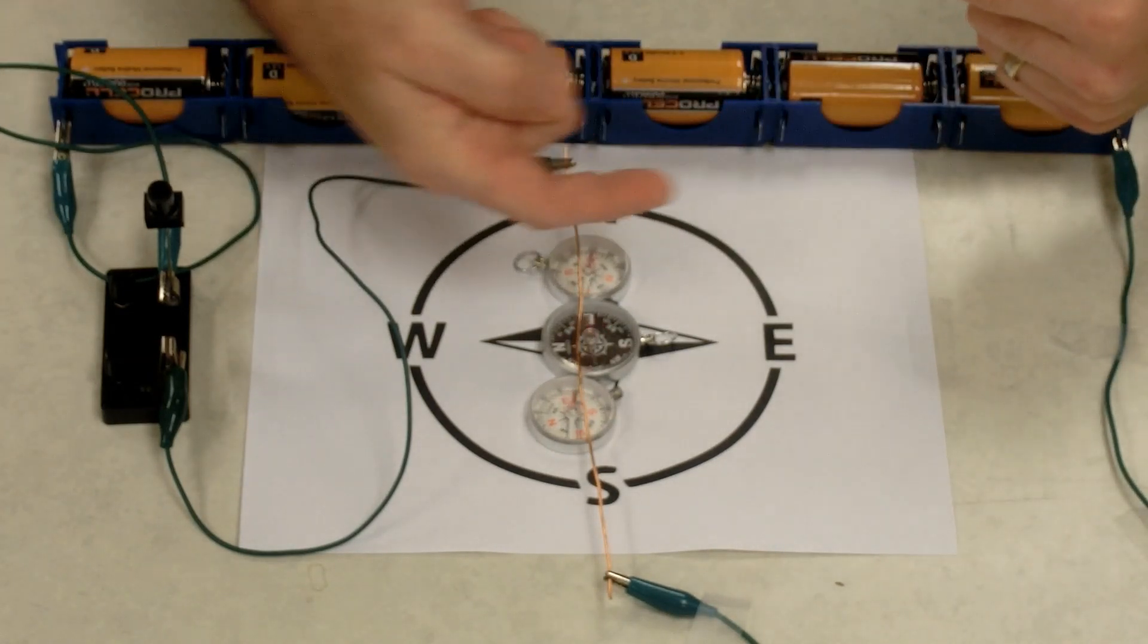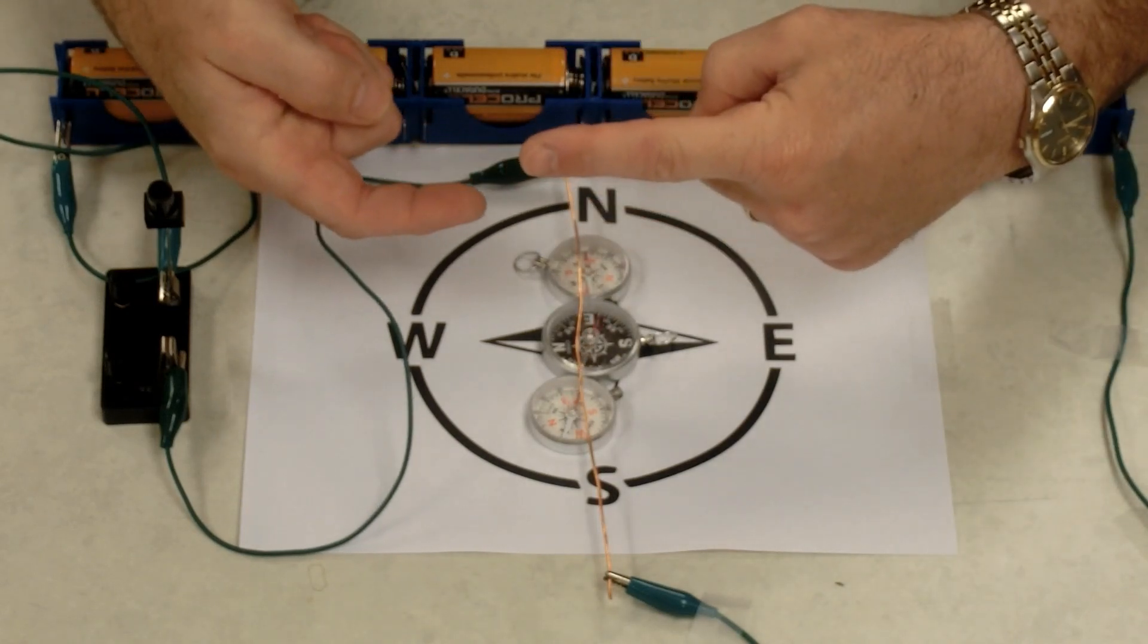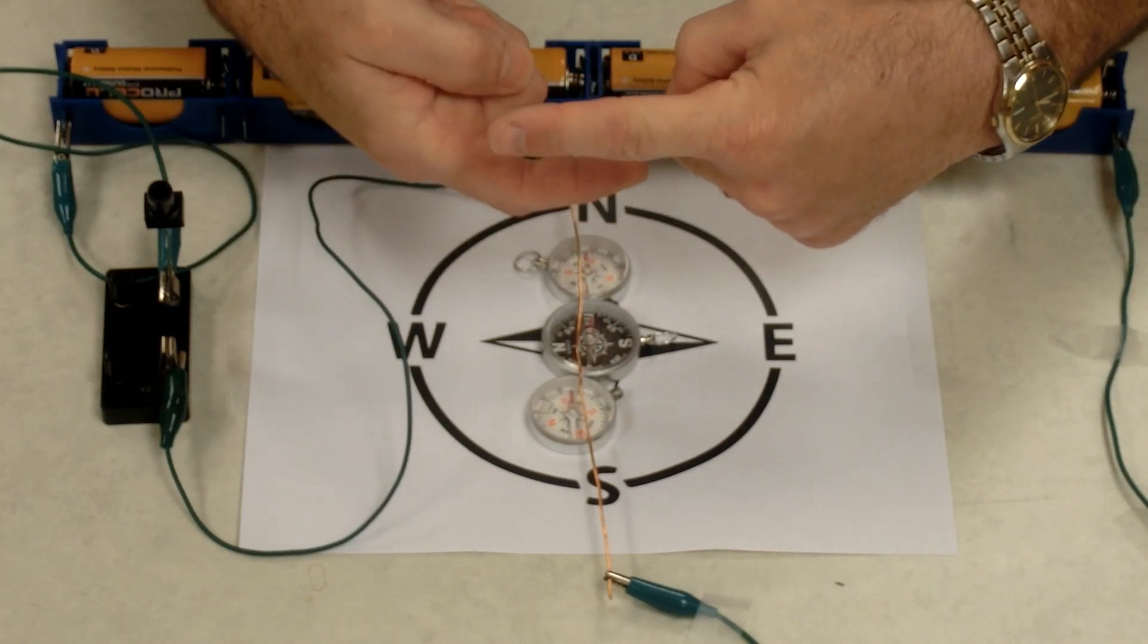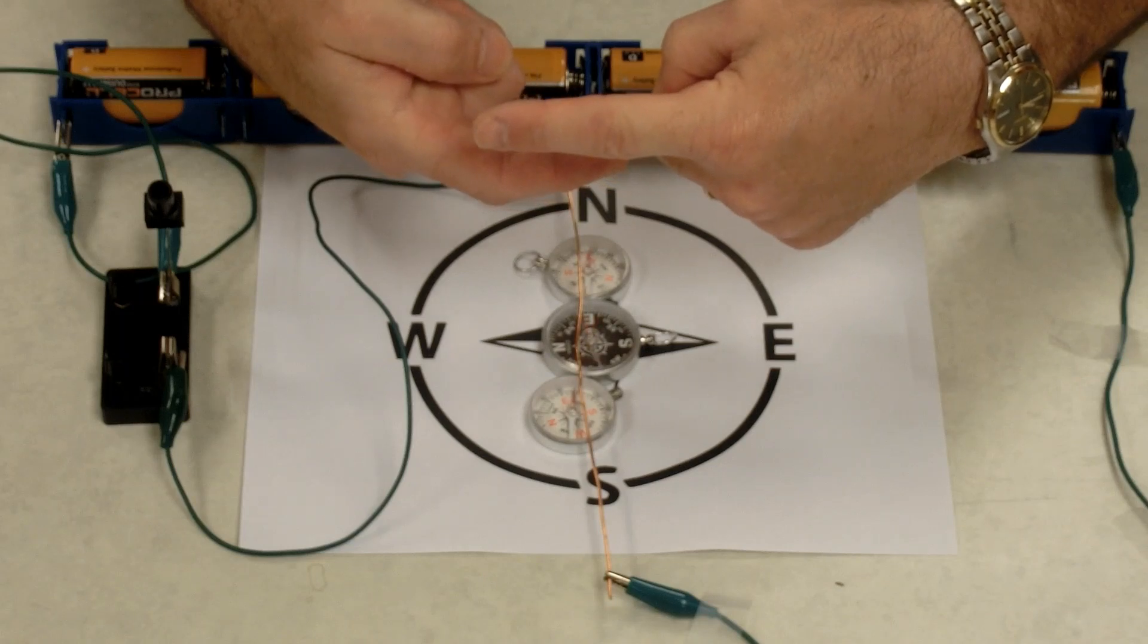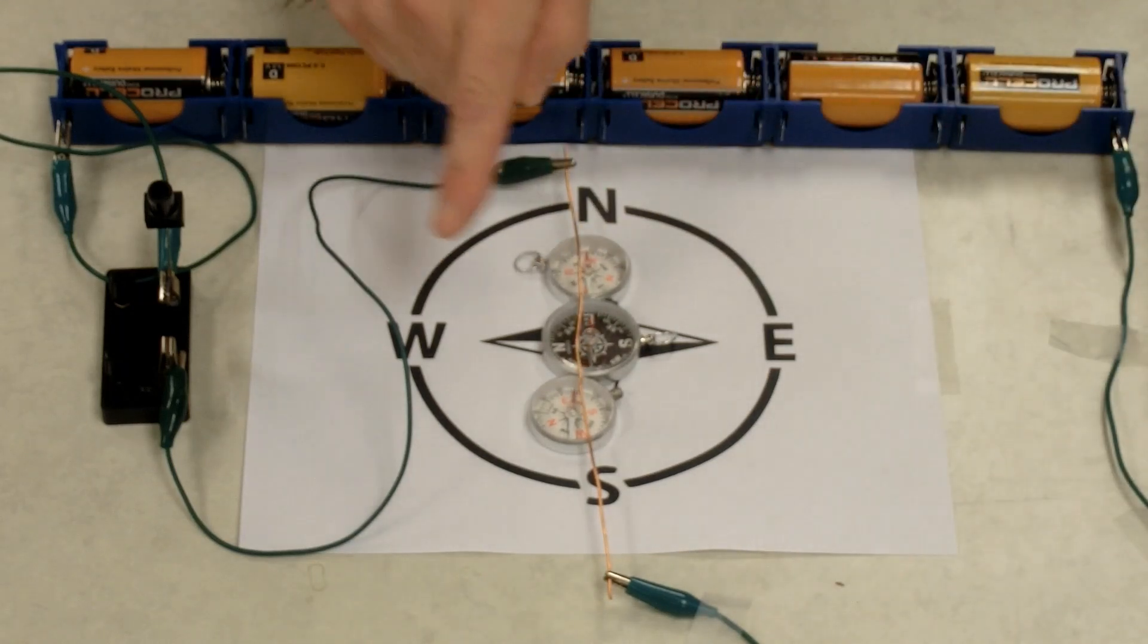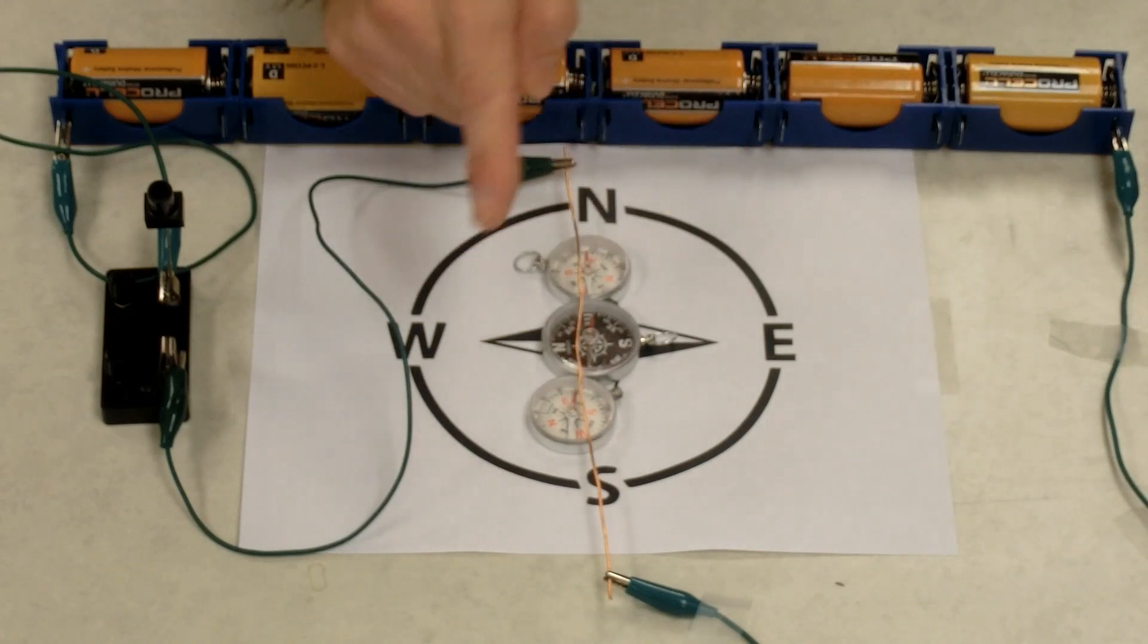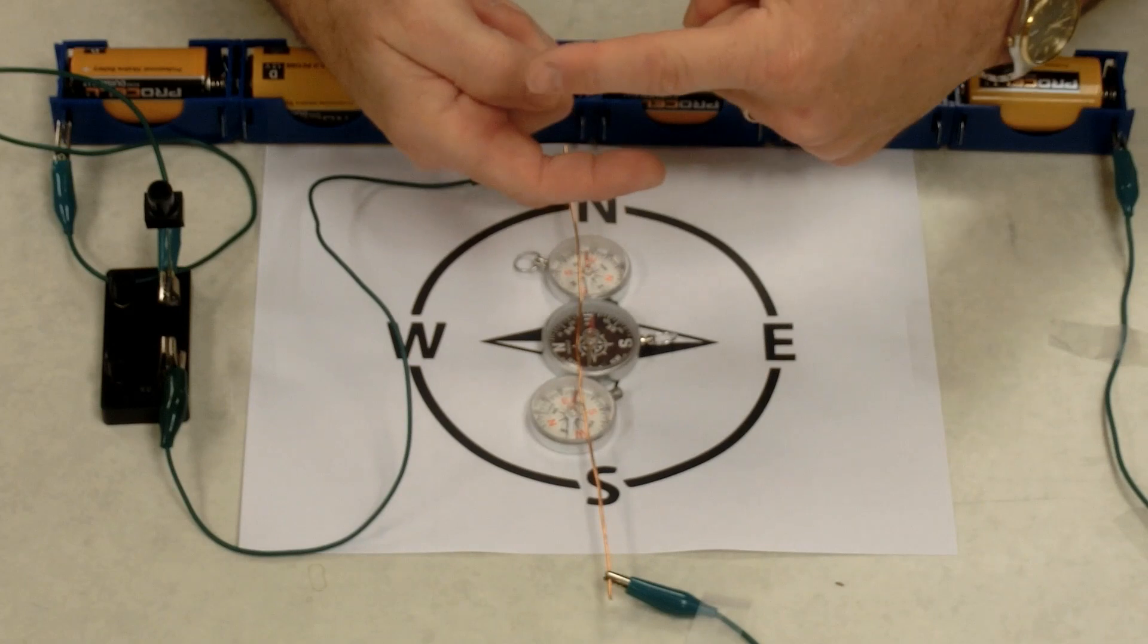Above the wire it was to the west, and below the wire was to the east. This is how Michael Faraday and Hans Christian Oersted determined that the magnetic field circles the wire. Because if it circles the wire, it points one direction below and one direction above.